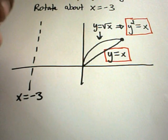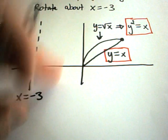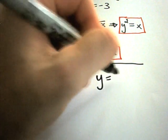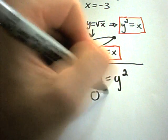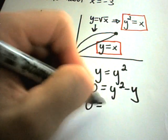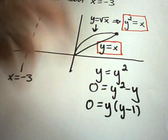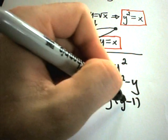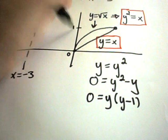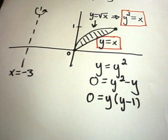And again, all I need to do is find my points of intersection. To find the y coordinates, just like before, you set them equal. Now we can set y equal to y squared. Just like before, you'll subtract the y over. This is a quadratic equation. You can factor a y out, and you'll have y minus 1 left. If you solve each individually, that means y equals 0 or y equals 1. And hey, that's what it looks like. So here's 1 up here. And again, we're rotating this region about the line x equals negative 3.